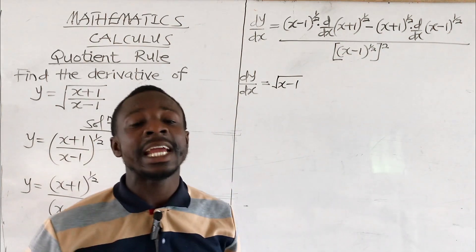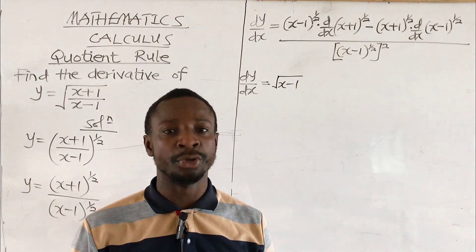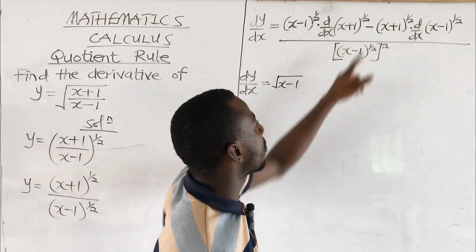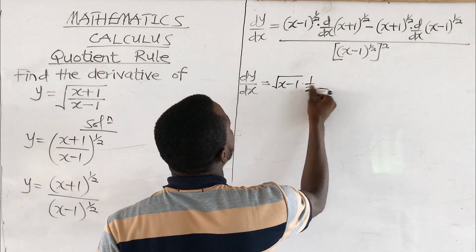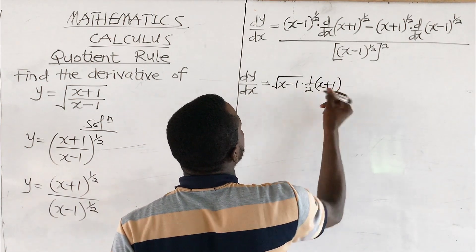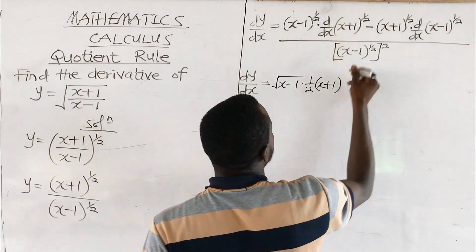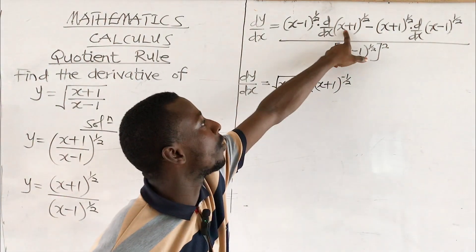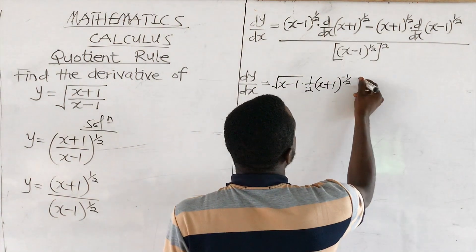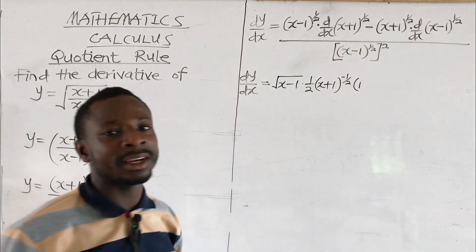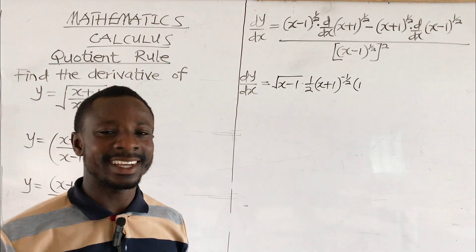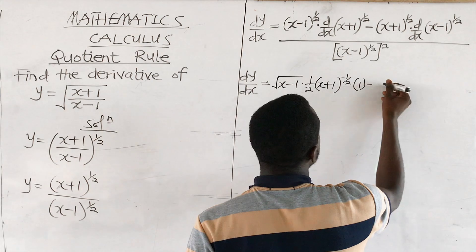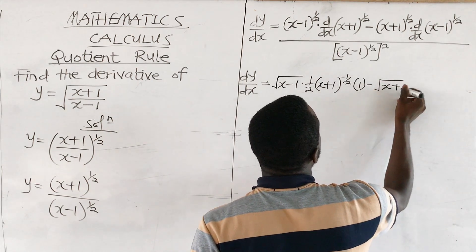Now let's differentiate using the chain rule, because this expression carries an exponent. The exponent multiplies the bracket: we get half times (x plus 1) to the power (half minus 1), which is minus half. Then we differentiate what's inside the bracket — differentiating x gives 1, differentiating the constant 1 gives 0, so we have 1. Note that (x plus 1) to the power half is the same as root of (x plus 1).